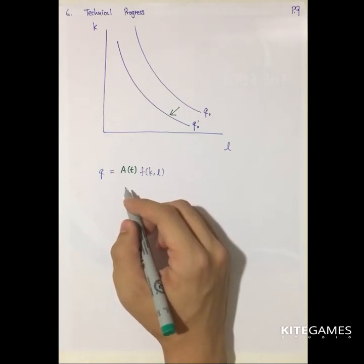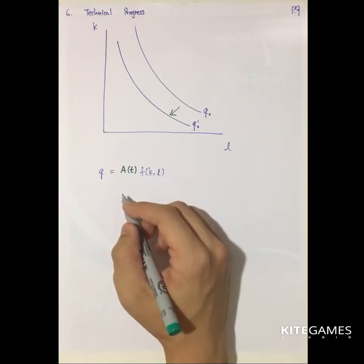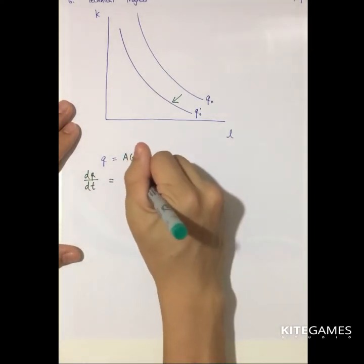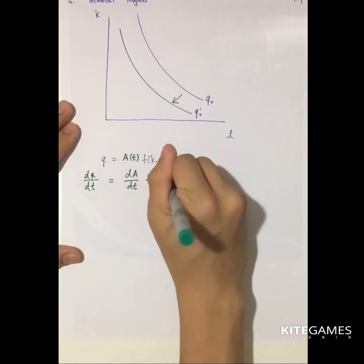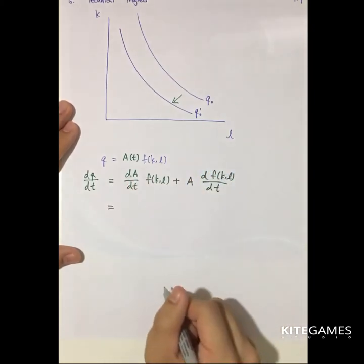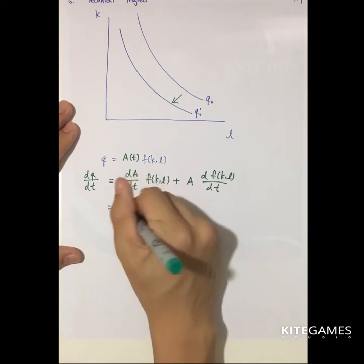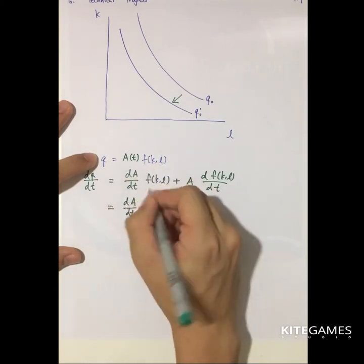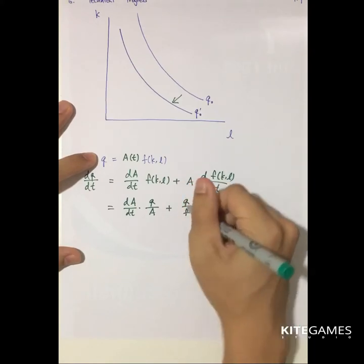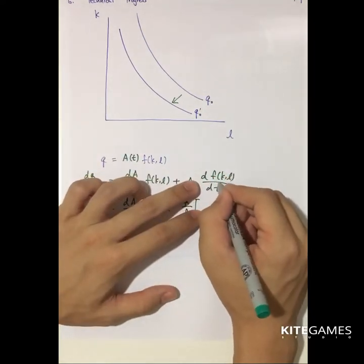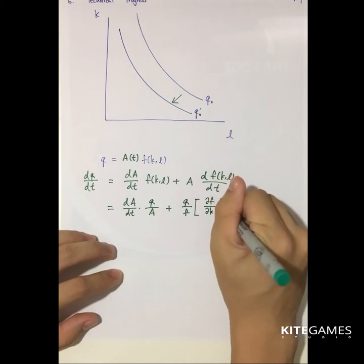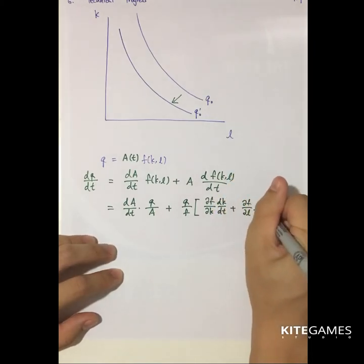Next, we want to see what the rate of increase in technological progress is. We differentiate with respect to time t. This equals (dA/dt) times the production function F, plus A times (dF/dt). Substituting F = Q/A and rearranging, then differentiating F with respect to t gives: (∂F/∂K)(dK/dt) + (∂F/∂L)(dL/dt) — the total derivative.